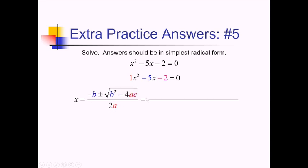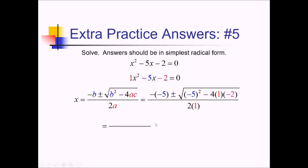Plugging everything in, we have negative negative 5 — the b value is negative 5, the coefficient of x — plus or minus the square root of negative 5 squared, minus 4 times the a value of 1, times the c value negative 2, all divided by 2 times 1. Simplifying: negative negative 5 is 5. This gives us plus or minus square root of 25, and then negative 4 times 1 times negative 2 is positive 8, all over 2. So 25 plus 8 is 33. And 33 has no perfect square factors, so this is as simplified as it can get, and we are done.